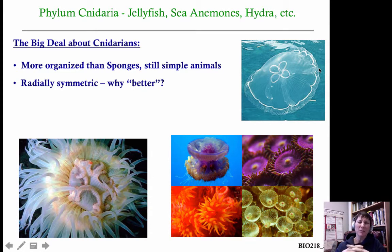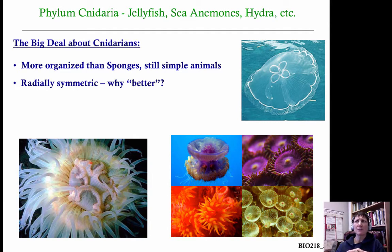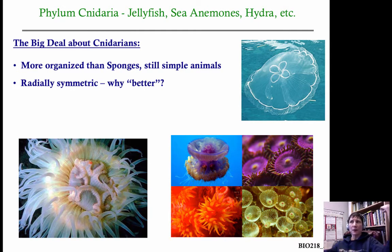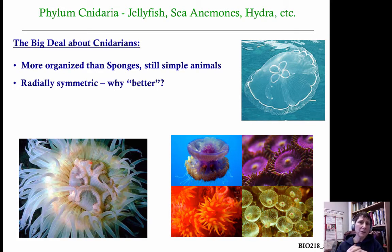These guys exhibit radial symmetry. You can think of them as being circular — you can divide them in any number of pie slices and they're virtually similar in each of those pieces. That's an advance in responding to the environment compared to sponges, because they can respond to their environment from all sides of their bodies and they have sensory organs that sponges lacked.